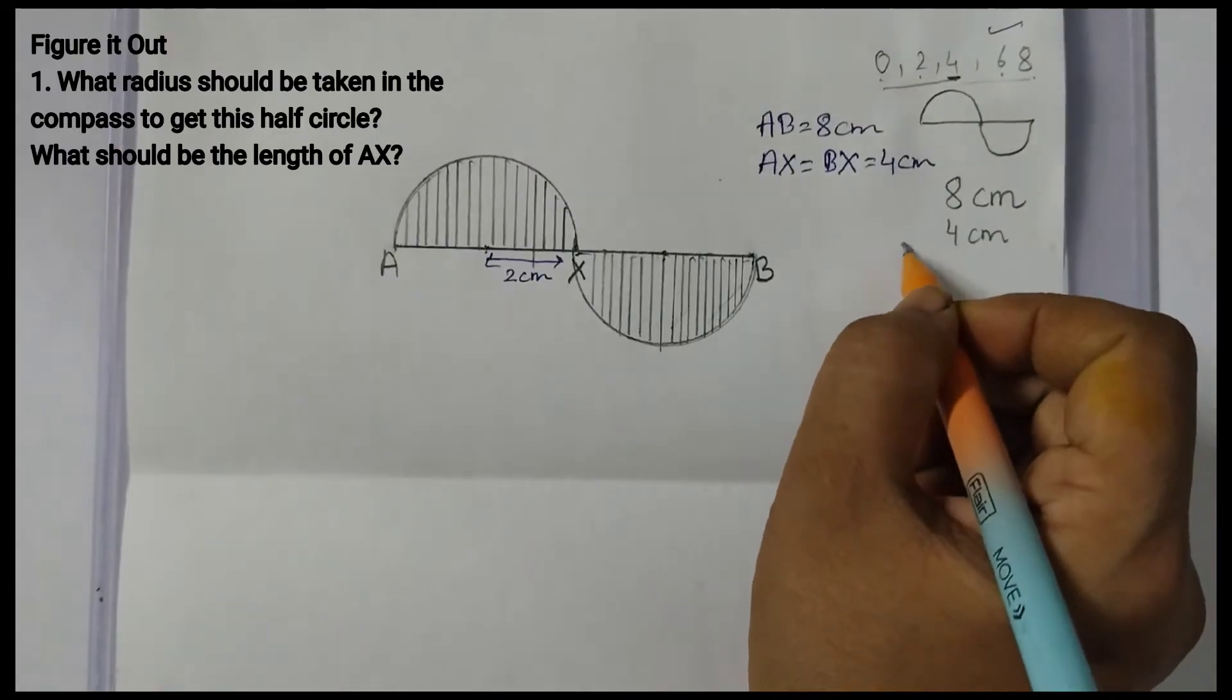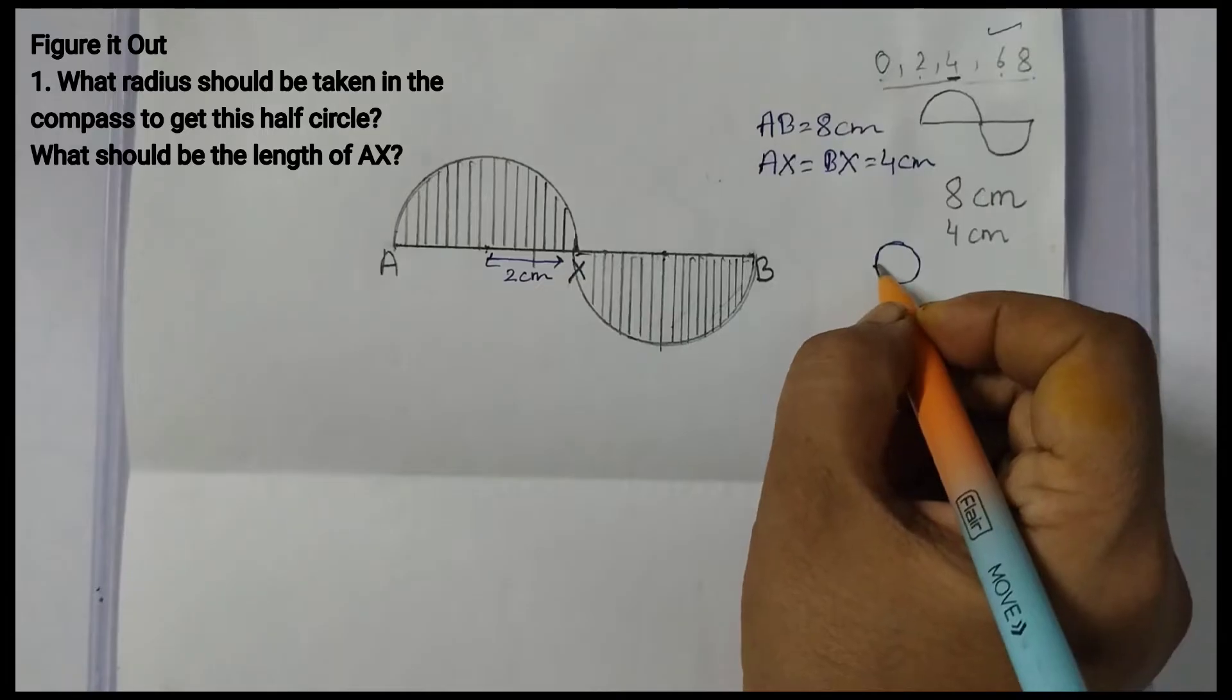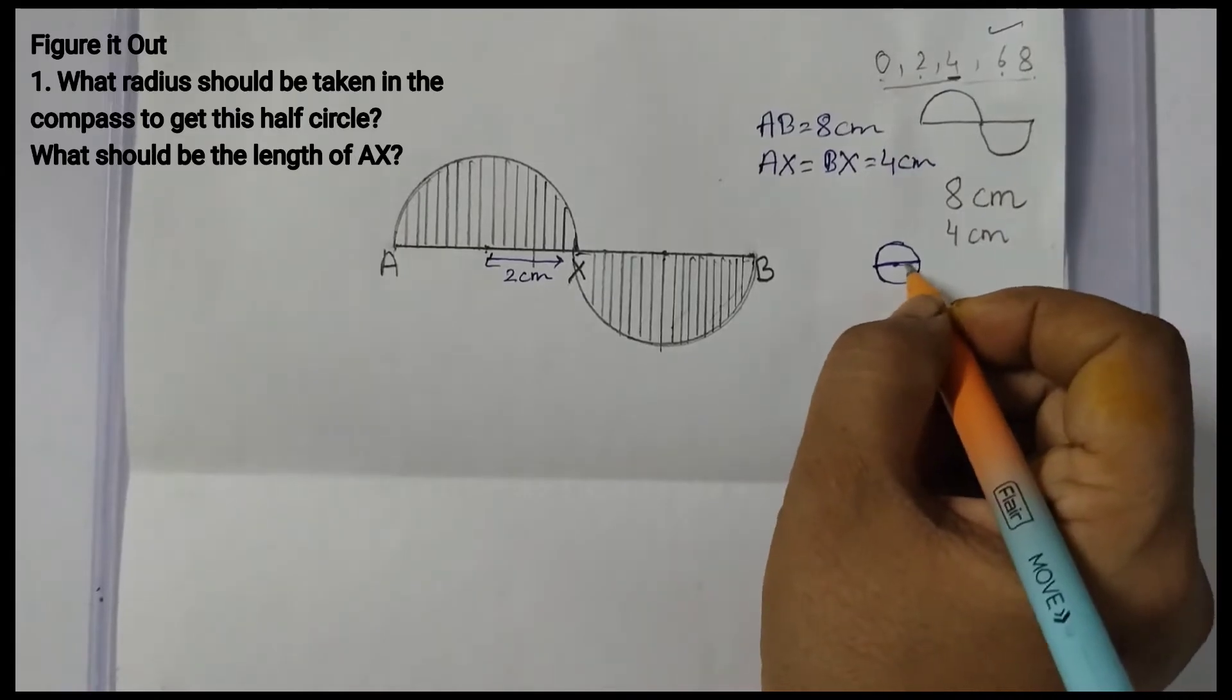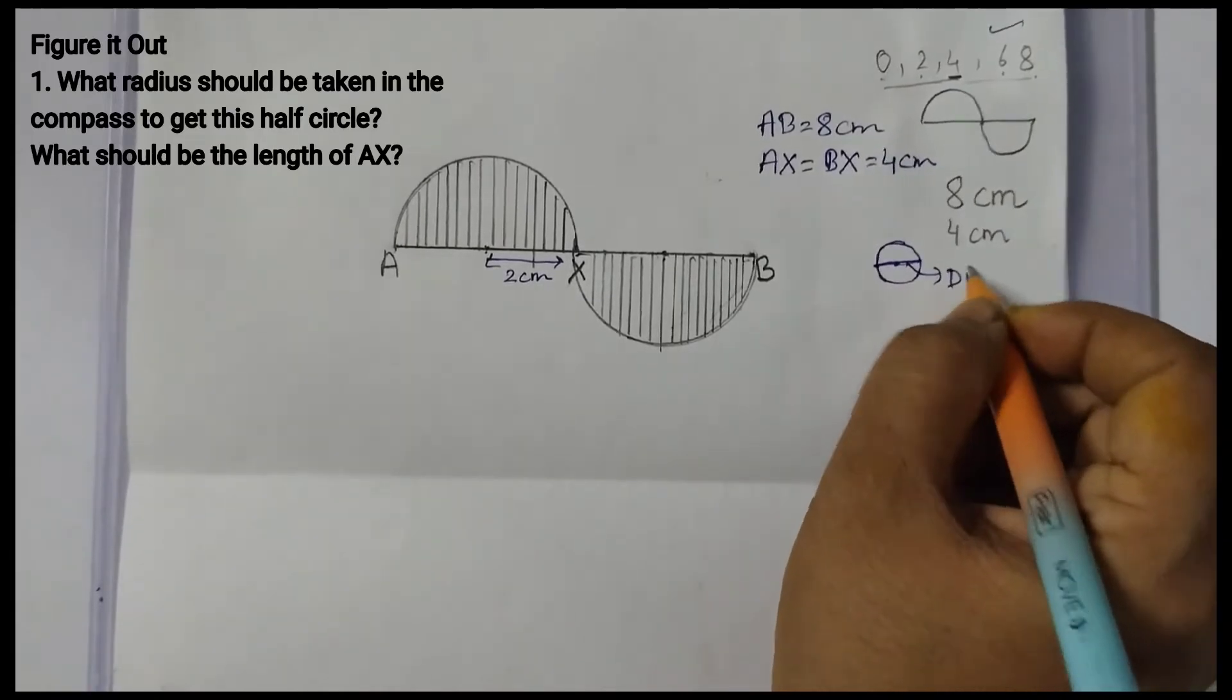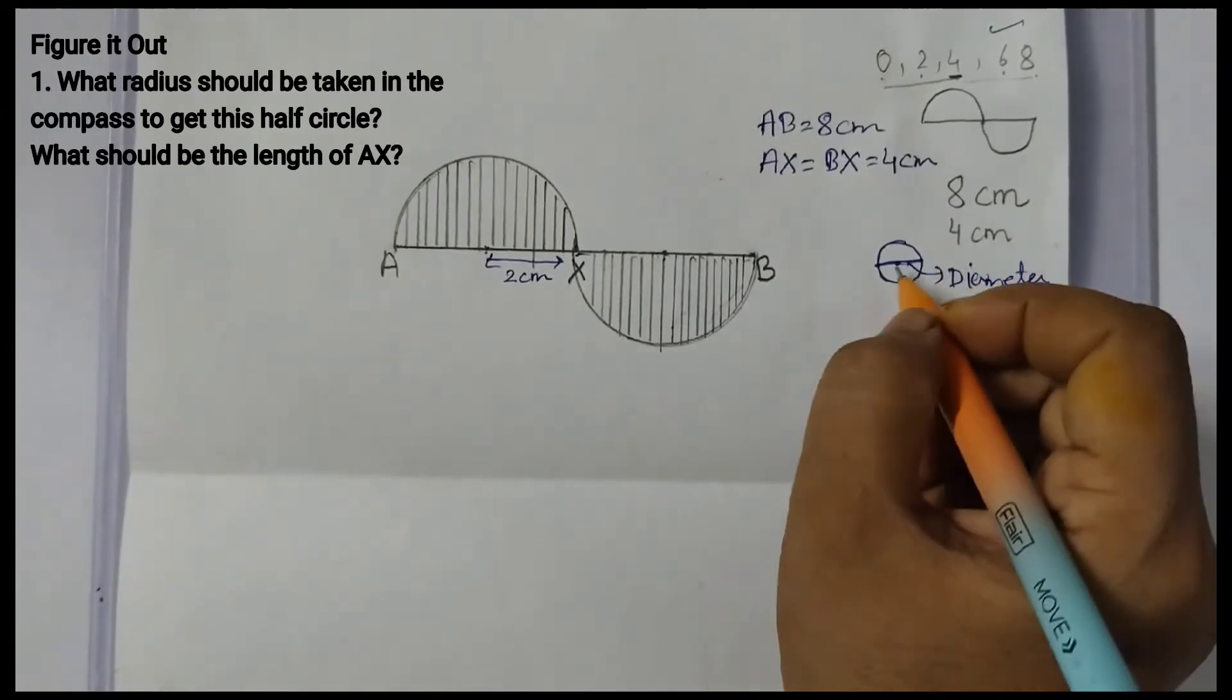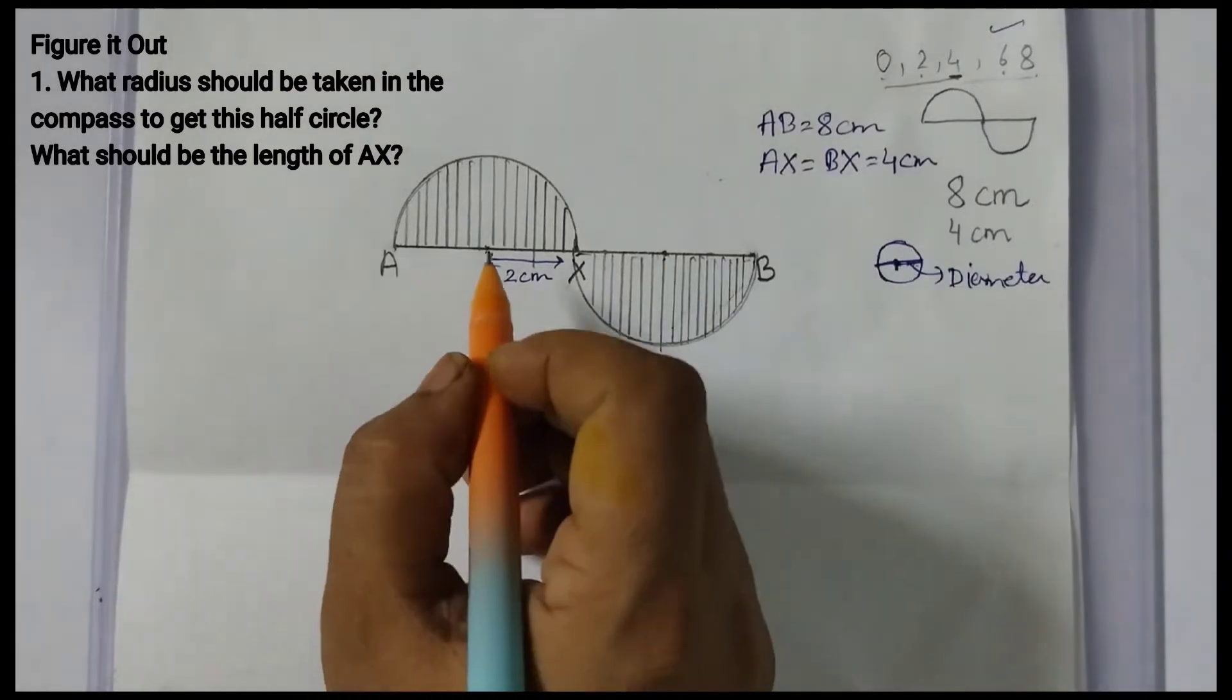You must know what is a radius. If this is a circle, when we draw a line passing through the center, this is called the diameter. This line segment is called the diameter and half of this diameter is called the radius.